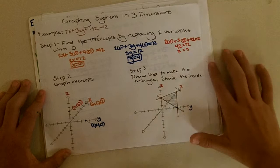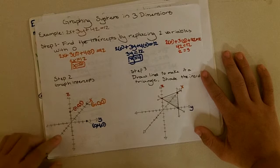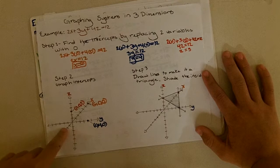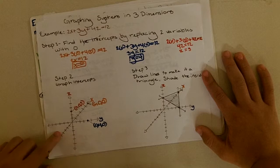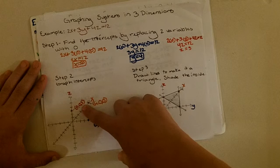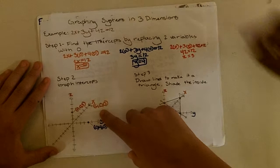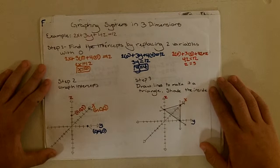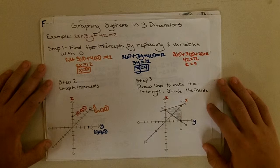The difference from a two-dimensional graph is that x is the diagonal line, y is the horizontal line, and z is the vertical line. You plot the three intercept points: z-intercept at (0, 0, 3), x-intercept at (6, 0, 0), and y-intercept at (0, 4, 0) — using the (x, y, z) format. The third step is to draw lines connecting those points, forming a triangle in three dimensions, then shade the inside to complete the graph.